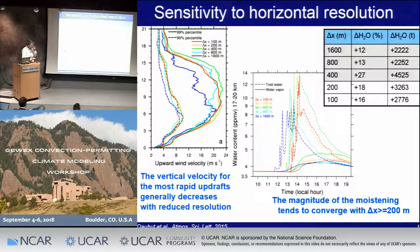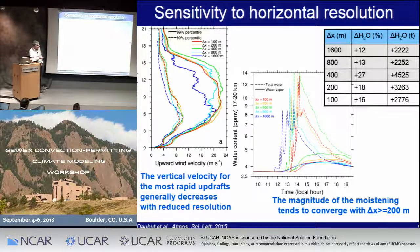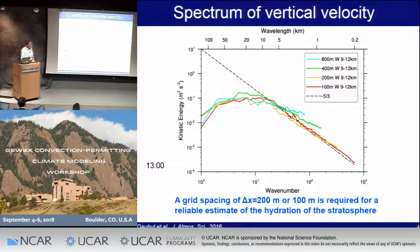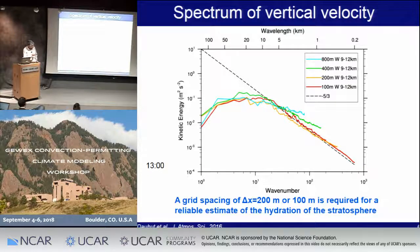This has an impact on the water in the stratosphere — the dashed line for total water and the solid line for water vapor — and we have almost a convergence at 100 and 200 meters, with about 3,000 tons of water vapor injected into the stratosphere. The vertical spectrum of vertical velocity shows that the two highest-resolution simulations match the theoretical spectrum with a slope of minus 5/3, whereas the other simulations in the gray zone of turbulence are overestimated.